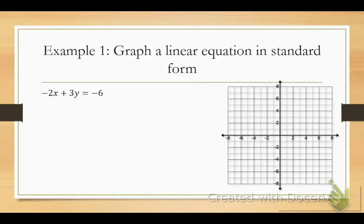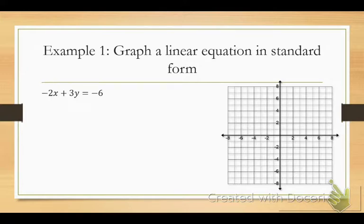In example one, we're graphing a linear equation that is currently written in standard form. Remember standard form: ax plus by equals c. Here's my x term, here's my y term, and here's my number by itself. In order to graph a linear equation originally written in standard form, I have to put it in slope-intercept form.